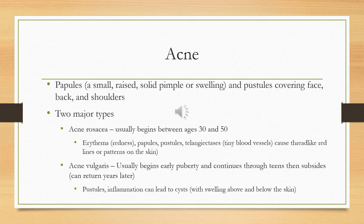Acne is a chronic inflammatory disease. You might see papules and pustules over the face, back, or shoulders. There are two types: acne rosacea and acne vulgaris. Acne rosacea is more common in individuals between ages 30 to 50 and may present with erythema, papules, or pustules.